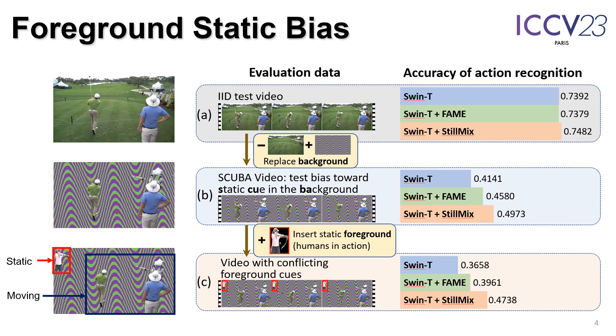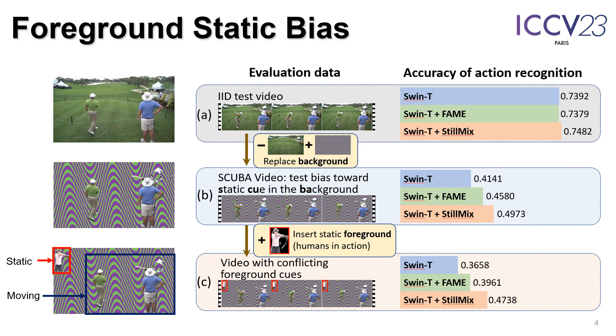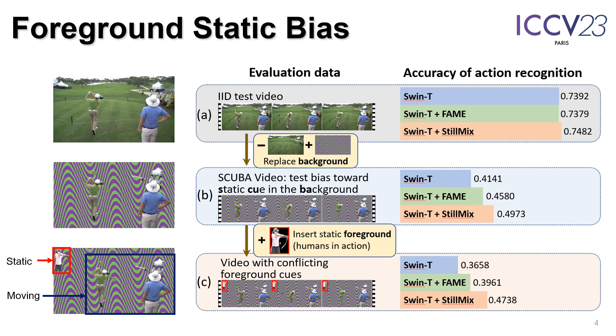Our evaluation showed that vanilla action recognition methods and background bias mitigation techniques could not mitigate foreground bias, demonstrating the existence of foreground static bias.